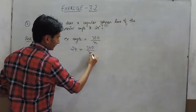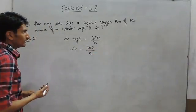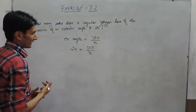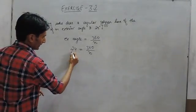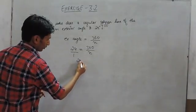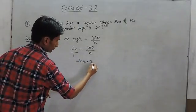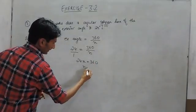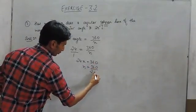360 upon n, and you have to find the number of sides the polygon has. So, we can simply cross multiply, so 24n is equal to 360, so n will be equal to 360 upon 24.